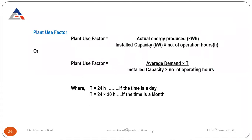Plant use factor equals actual energy produced divided by installed capacity of the plant multiplied by number of operating hours — how many hours the plant is in running condition. It is also calculated as average demand multiplied by T, divided by installed capacity and number of operating hours. Here T is 24 for daily purpose, or 24 into 30 for monthly calculation.